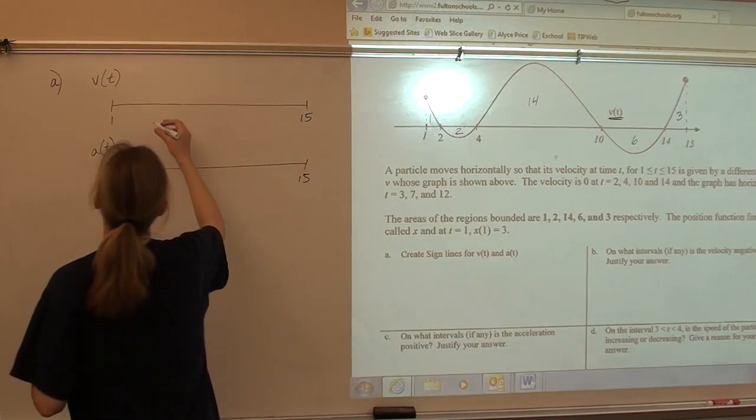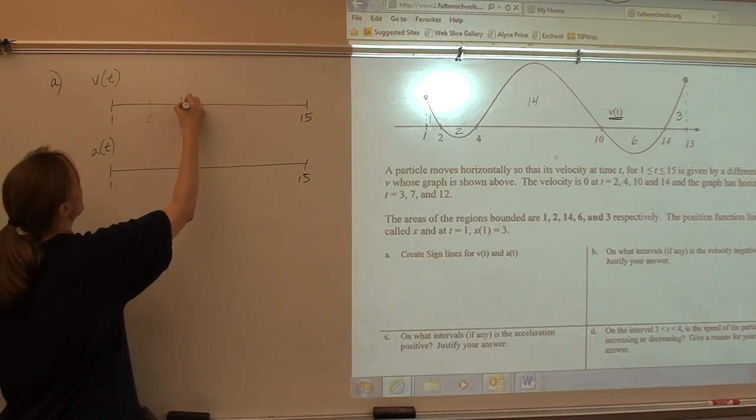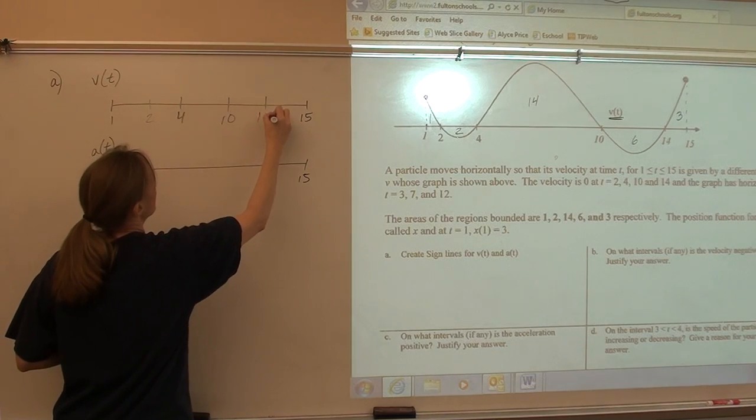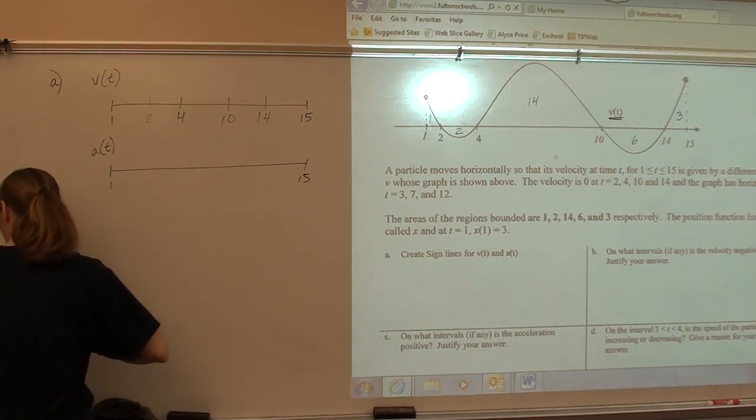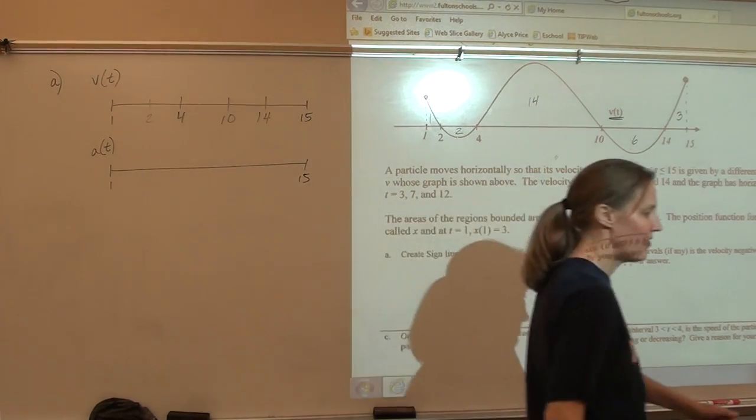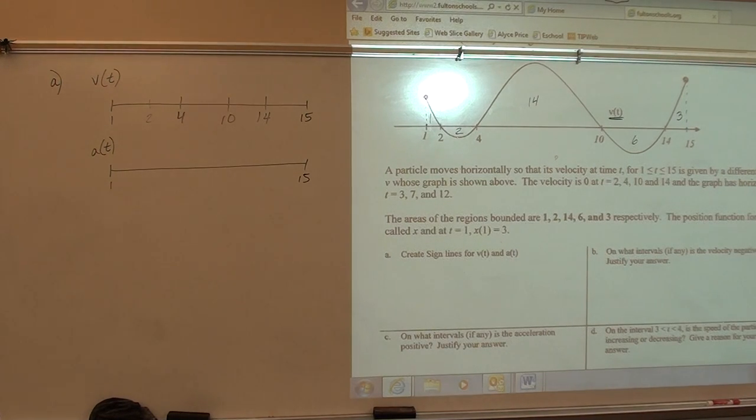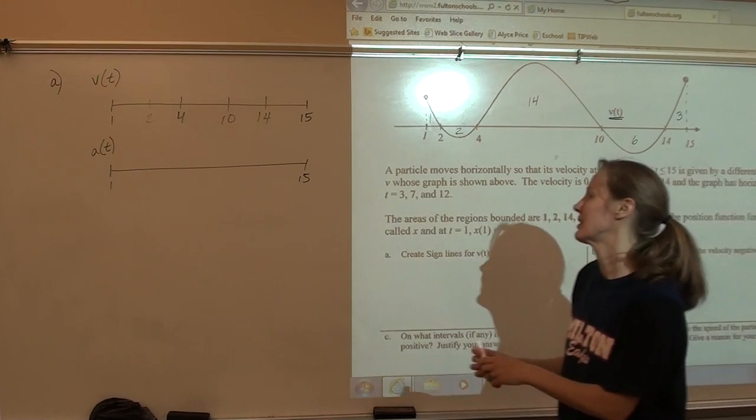So those have to go on our sign line. 2, 4, 10, and 14. So the signs of velocity on the velocity sign line would literally be where is it above or below the x-axis.